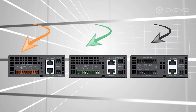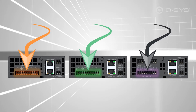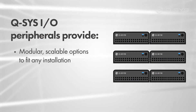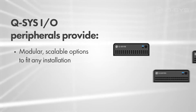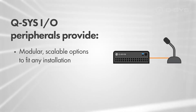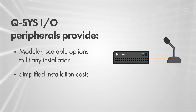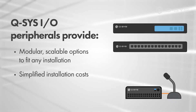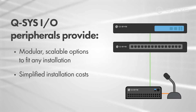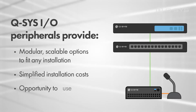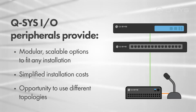By decoupling local I/O from your processing hardware, Q-SYS I/O peripherals provide modular, scalable options to fit any installation. Placing these peripherals in close proximity to the real-world devices they service can greatly simplify your installation costs by eliminating long runs of other cabling, instead relying on the network to transport your channels to the core. More importantly, it provides you the opportunity to use a few different system topologies.